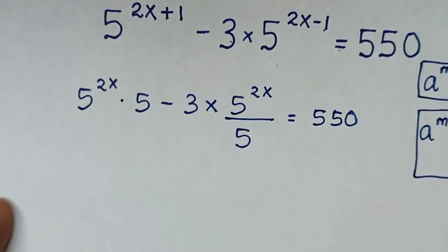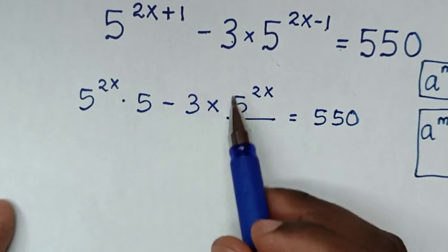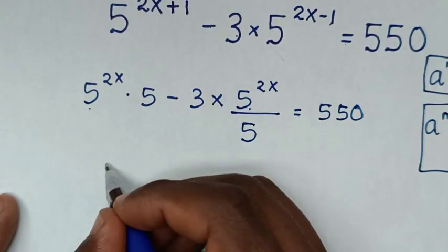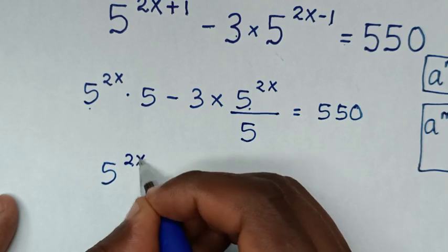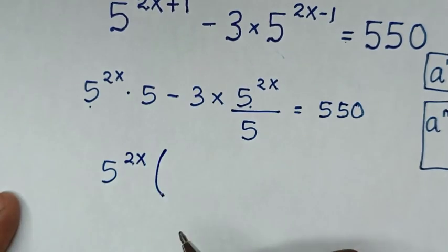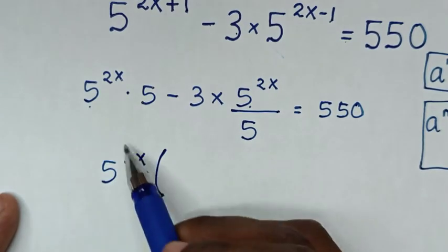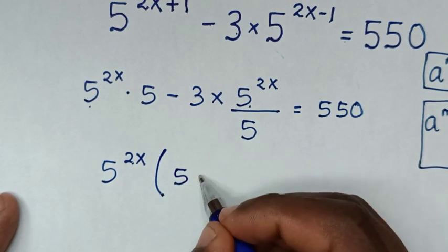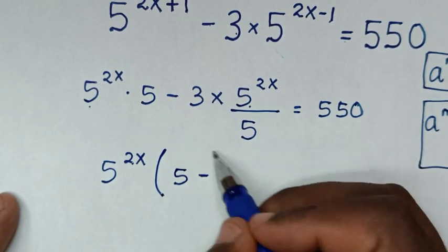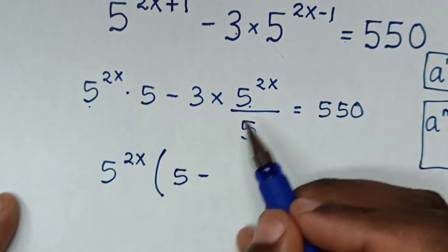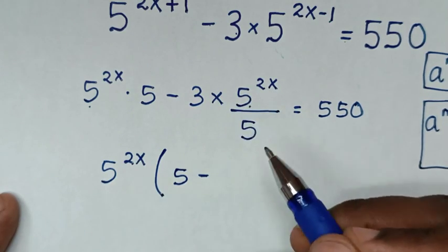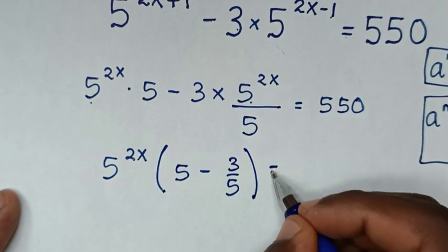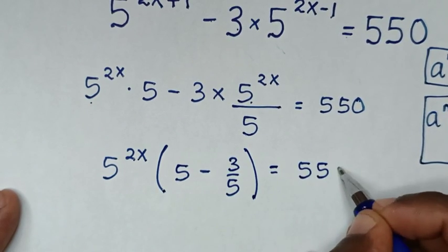Then in the next step, 5 power 2x is common, so we take 5 power 2x out of the bracket. This divided by 5 power 2x will cancel, so it will be 5. Then minus: this divided by 5 power 2x will cancel, so it will be 3 over 5. The bracket is equal to 550.